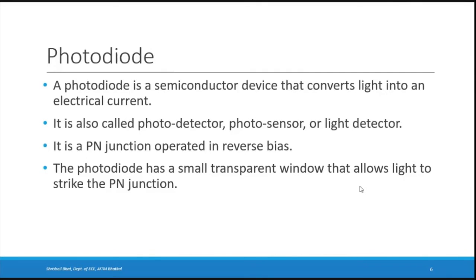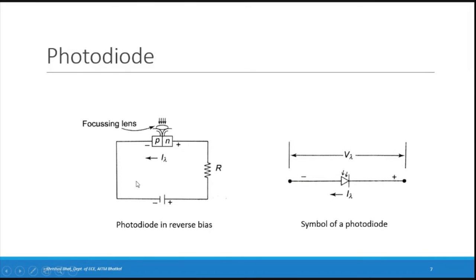Now we'll look at two diodes: a photo diode and an LED. A photo diode is a semiconductor device which converts light energy into electrical current. It is also called a photo detector, photo sensor, or light detector. It is a p-n junction operated in reverse bias, with a small transparent window that allows light to strike the junction.